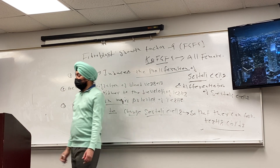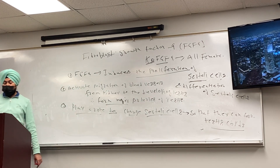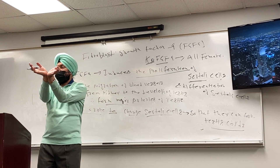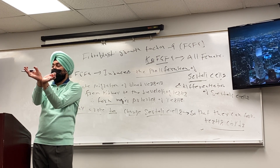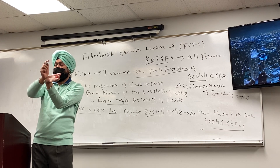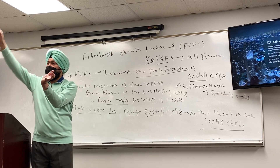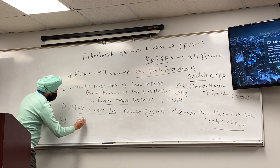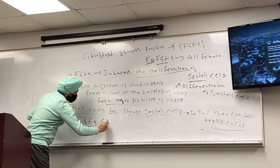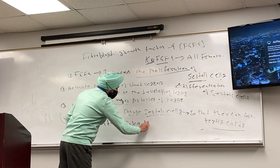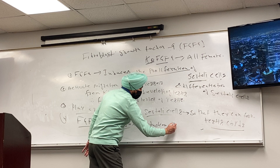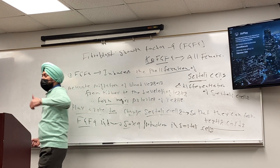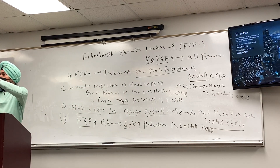FGF9 also plays a role in changing Sertoli cells so that they can form testes cords. The testes cords are formed by this process. Now, the mesenchymal cells in the testes become Sertoli cells, regulated by SOX9. SOX9 makes FGF9, and FGF9 makes back SOX9. When they have become Sertoli cells, FGF9 induces SOX9 production in Sertoli cells. So Sertoli cells start making SOX9, SOX9 makes FGF9 — that loop is continuously acting.